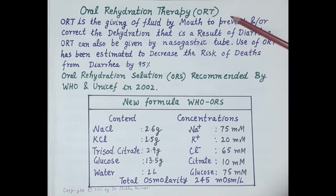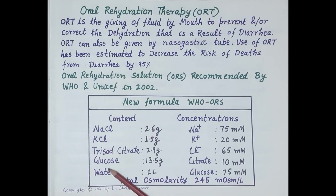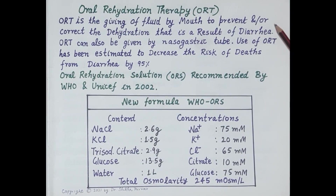Hello students. Today we are going to discuss oral rehydration therapy, that is ORT. A very important component of ORT is the oral rehydration solution, that is ORS. ORS consists of electrolytes dissolved in water. These electrolytes are minerals that when dissolved in water conduct electrical impulses from cell to cell in the body. The most important risk factor of diarrhea is dehydration, which occurs because of the loss of fluids and electrolytes from the body. ORT is the giving of fluids by mouth to prevent and/or correct the dehydration that results from diarrhea.